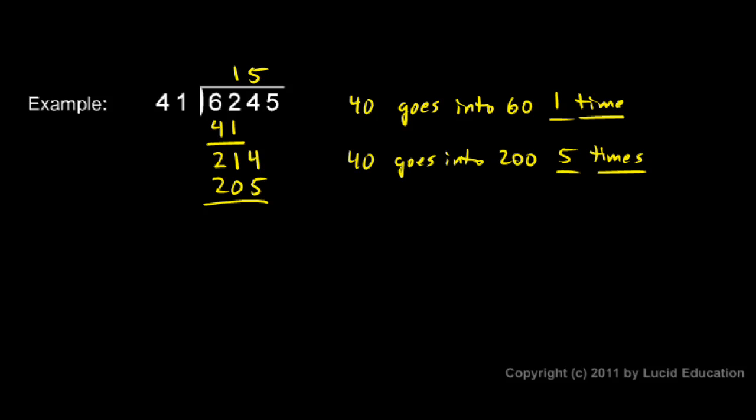And then I subtract. 4 minus 5 I can't do so I borrow. 14 minus 5 is 9. And that 1 has become a 0 due to the borrowing. So I end up with just a 9 right there. Then I bring down my next digit which is a 5. So I put the 5 there.